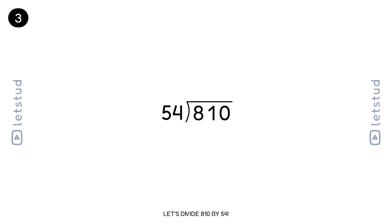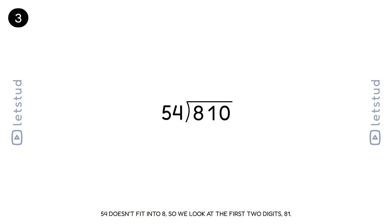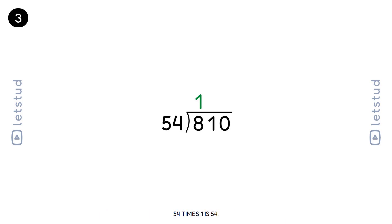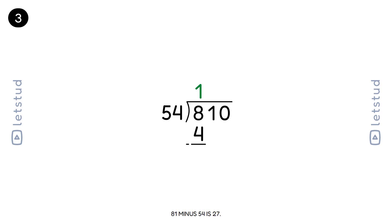Let's divide 810 by 54. We start with the digit 8. 54 doesn't fit into 8, so we look at the first two digits, 81. 54 times 1 is 54. 81 minus 54 is 27.